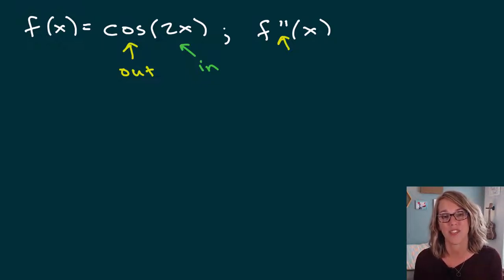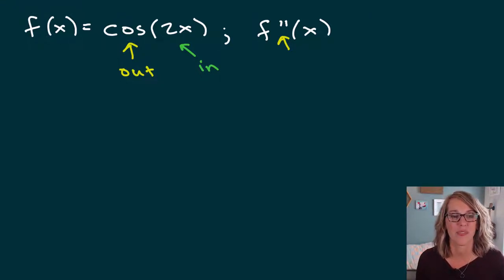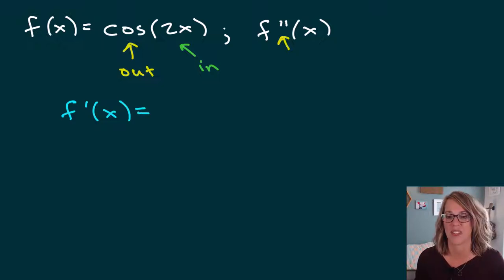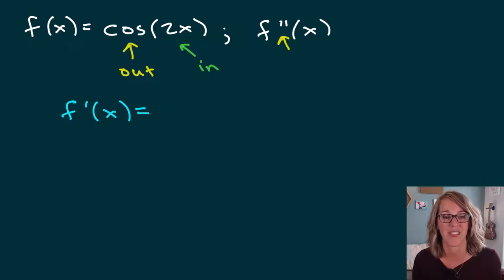If you need some more practice with chain rules, check out my link in the description below for a video. Let's go ahead and move through this one. We are looking for the first derivative, so f prime of x — let's work through that chain rule. Taking the derivative of the cosine first, holding the 2x fixed.